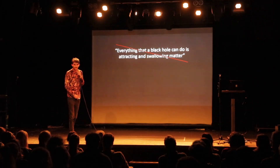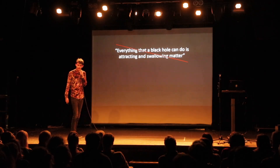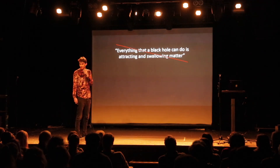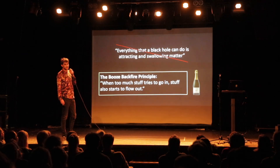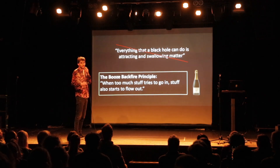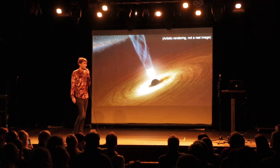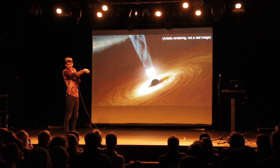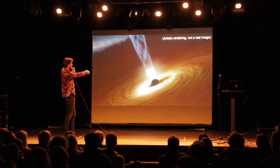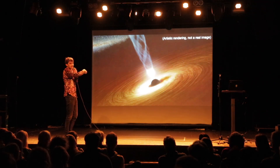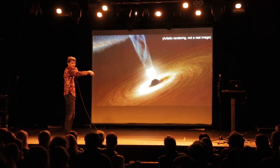To understand why, I'll ask you to remember the last time you had a terrible hangover. When you drink too much alcohol, at some point you reach that point of no return when you realize you're about to throw up. This is what we call the booze-backfire principle, which tells you that when too much stuff tries to go in, at some point stuff also starts to flow out. This is true also for black holes — black holes also have hangovers from time to time. Here is an artistic rendering of a black hole: you see the accretion disk, and a part of that gas is indeed falling in and will be lost forever — but not all of it.